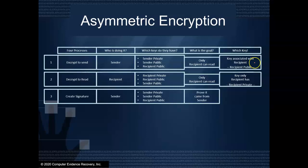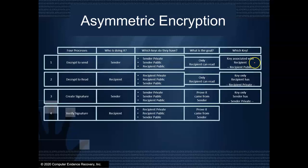What if we want to create a digital signature? We'll talk more about that later. Who's going to do this? Well, the sender's going to create that signature. And again, they have their public and private key and the recipient's public key. The reason that we're going to do this is to prove it came from the sender. So how do we have to do that? We have to use a key that only the sender has. That'll be the sender's private key.